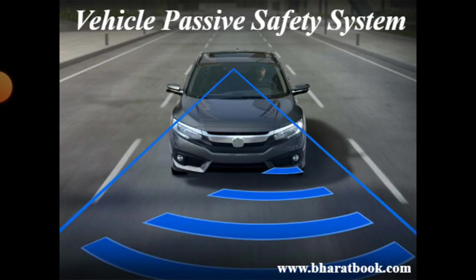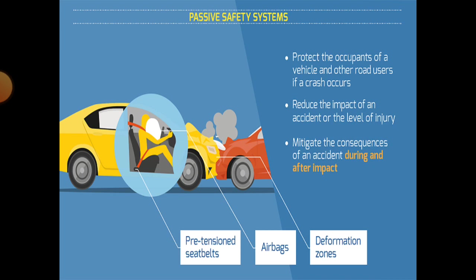Now, vehicle passive safety systems. In the passive safety system, there are three types: pre-tensioned seat belts, airbags, and deformation zones. These passive safety systems protect the occupants of a vehicle and other road users if a crash occurs. They reduce the impact of an accident or the level of injury, and mitigate the consequences of an accident during and after impact. For example, when there is an impact on your vehicle, an airbag deploys toward your face to protect the driver's head from damage or injury.